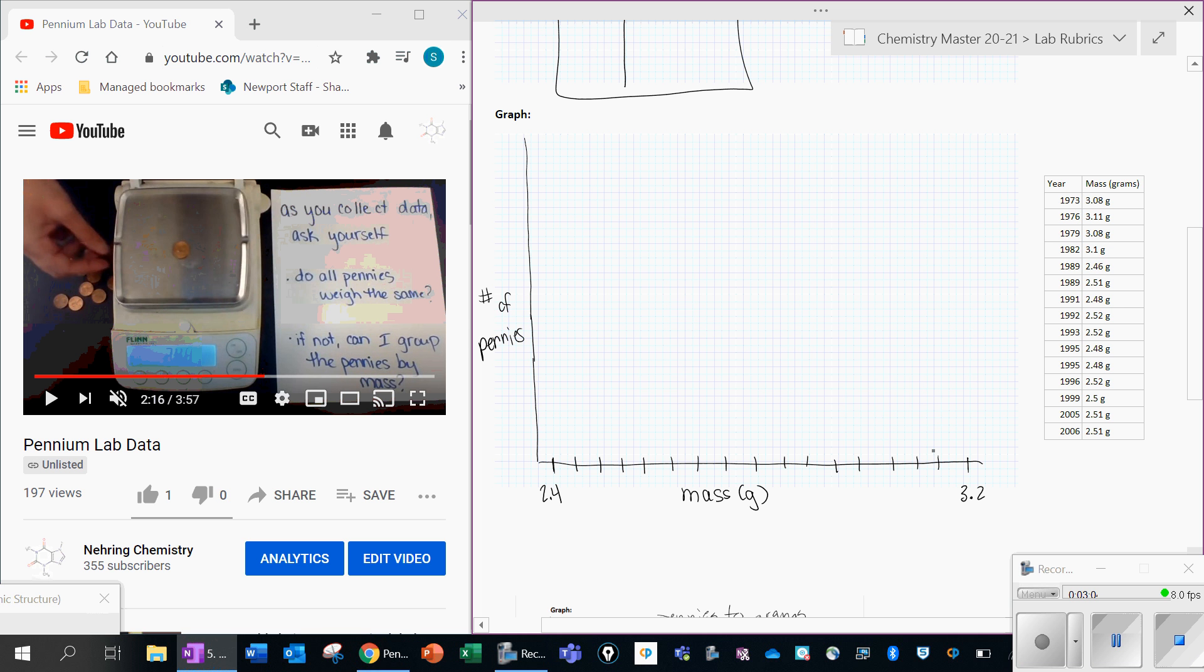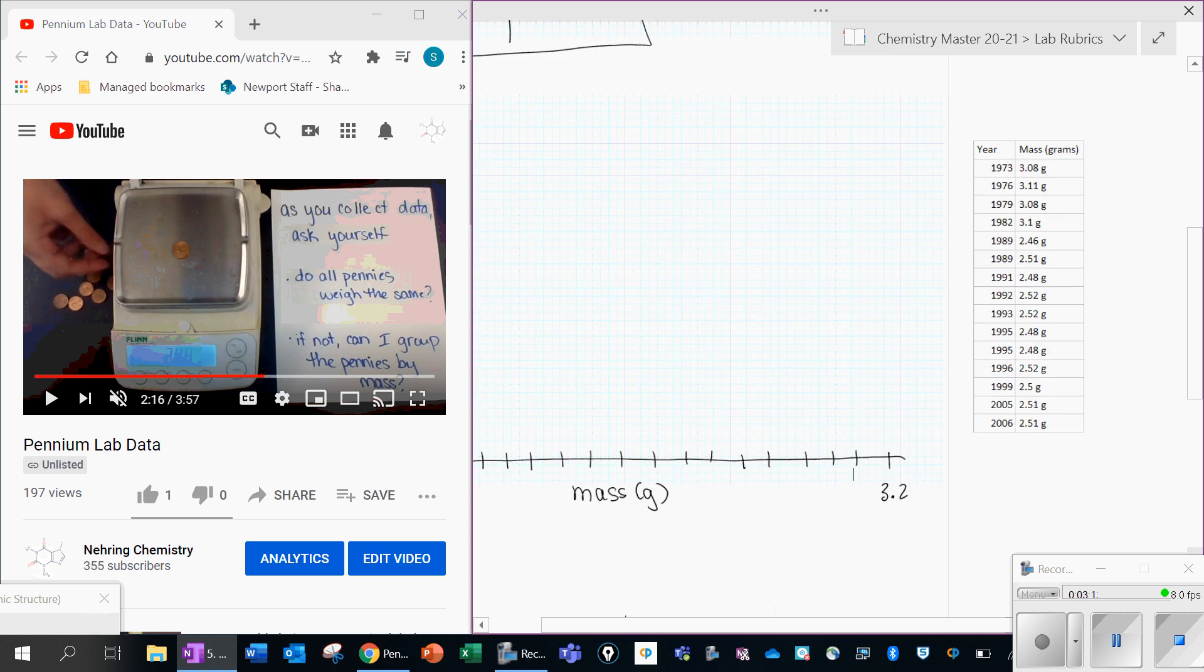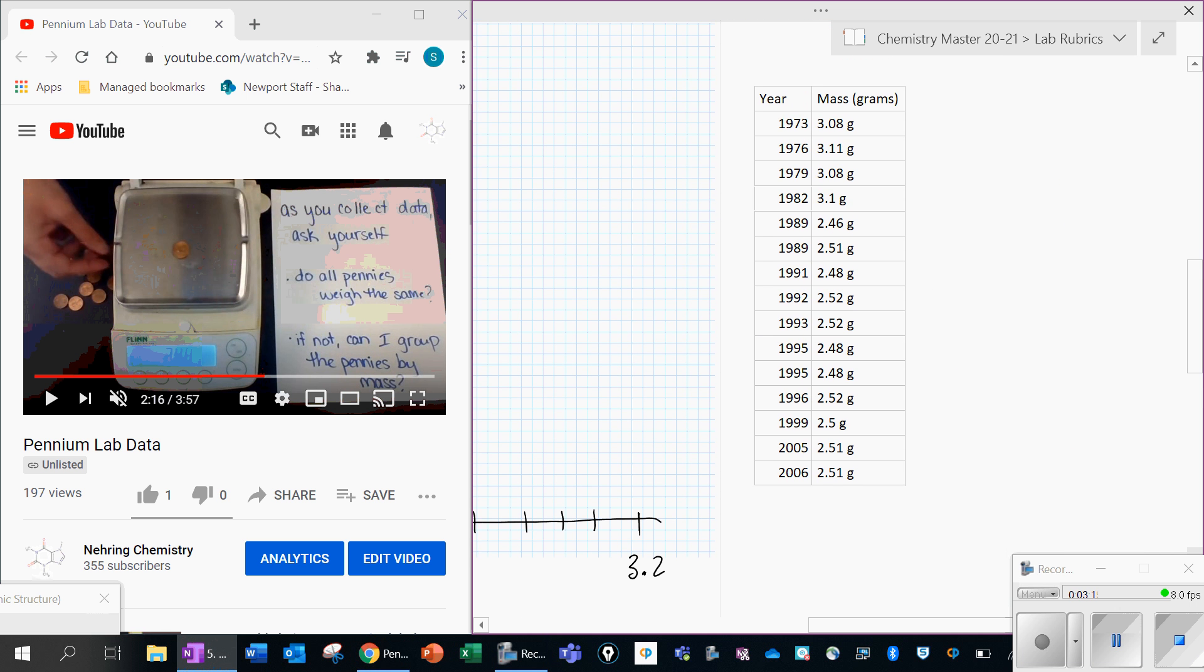And then our number of pennies. Well, what that means is we want to know how many pennies have a certain mass. So let's take a look over here at this data set. We can notice over here that let's look at 2.51 grams. It looks like this penny weighs 2.51. So does this one. So does this one. So does this one. So it looks like I have three pennies that weigh 2.51 grams. Okay. Then I can look at the ones that are 2.52 and you might color code them. So it looks like I have three pennies that weigh 2.52 grams. So that's what we mean by number of pennies versus mass.